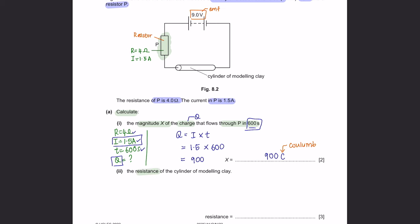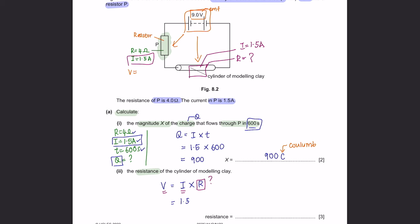Part 2: Find the resistance of the cylinder of modelling clay. Using Ohm's law (V = IR), we need the voltage across the clay. In a series circuit, the current is the same everywhere — so the current through the clay is also 1.5A. However, voltage is split according to resistance. Voltage across P = 1.5 × 4 = 6V. Total EMF is 9V, so voltage across the clay = 9 − 6 = 3V. Therefore, resistance of clay = 3 ÷ 1.5 = 2 ohms.